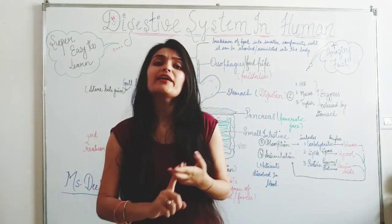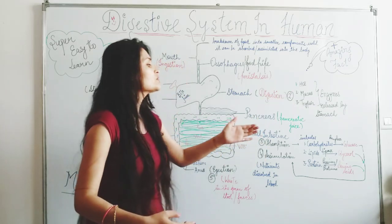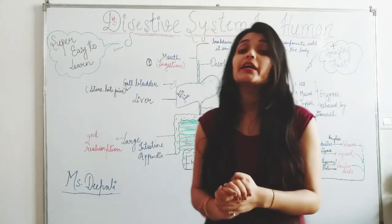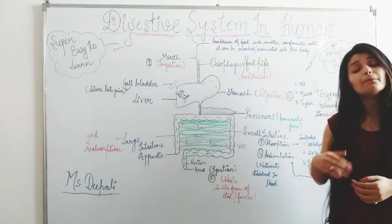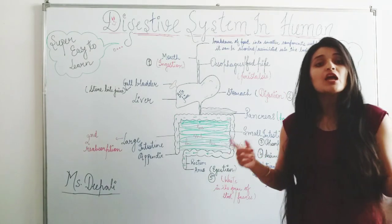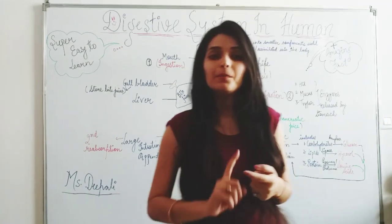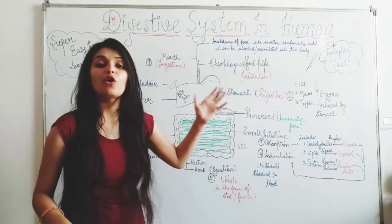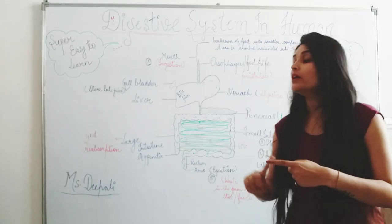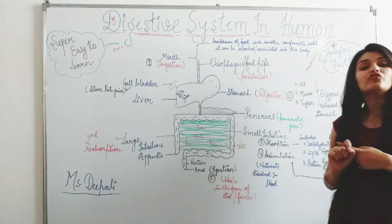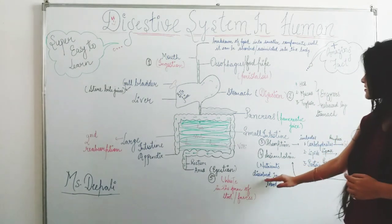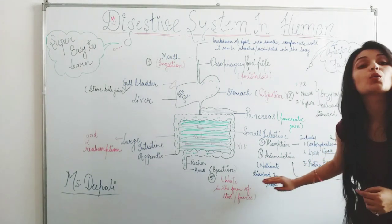So now our body has carbohydrates in the form of glucose, proteins in the form of amino acids, glycerol, and vitamins. The body will dissolve all of these into the blood. As soon as all these nutrients dissolve into the blood, you will get energy. When all three nutrients are dissolved into the blood after absorption — that process is called assimilation.